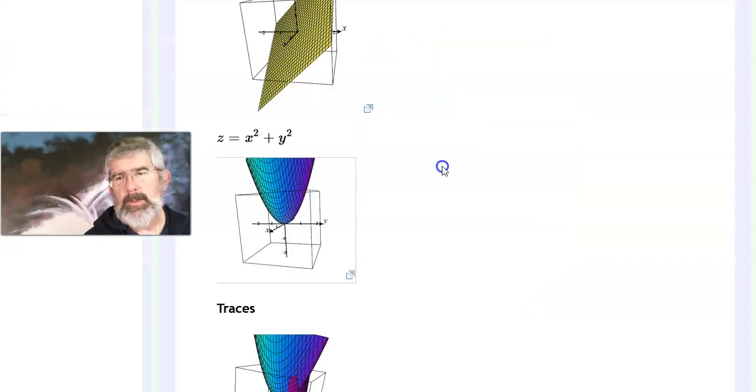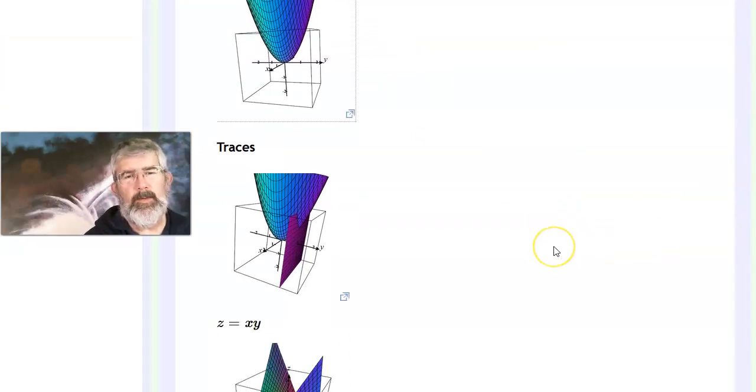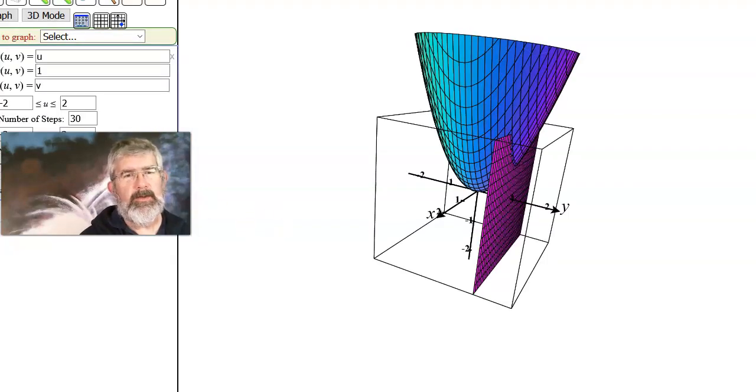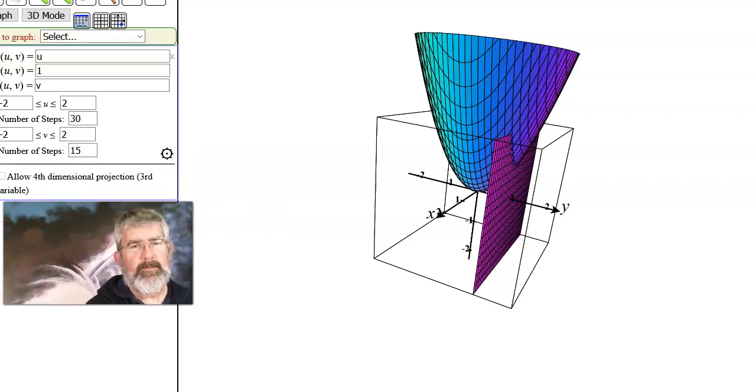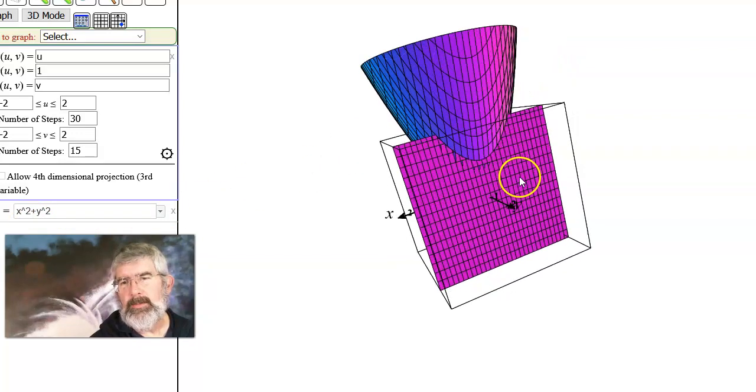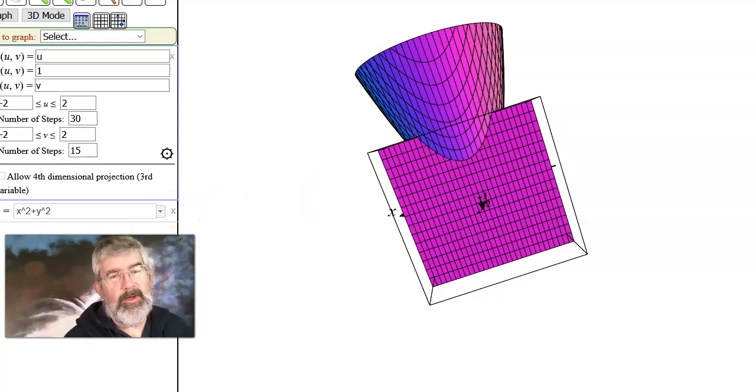Now, I want to quickly look at a notion called traces. And the traces are when you pick a particular x or particular y value and you look at how it slices the surface. So in the case that we just had here with z equals x squared plus y squared, that's this thing. I'm now looking at the plane y equals 1. And I can see that y equals 1 is intersecting my surface in a parabola. Well, sure.